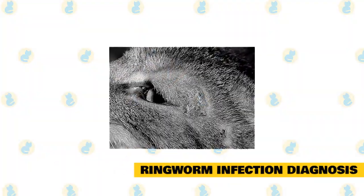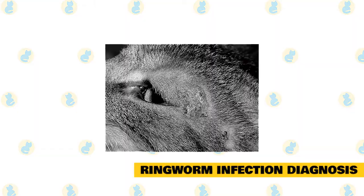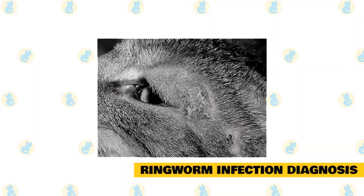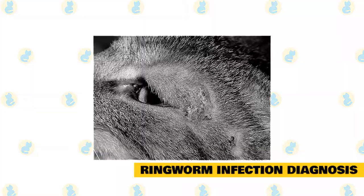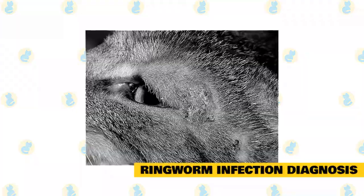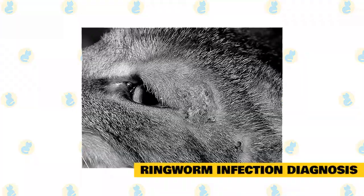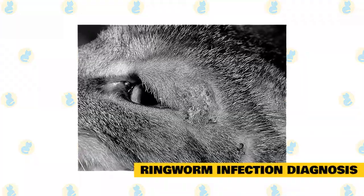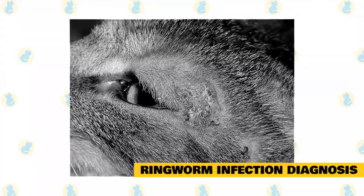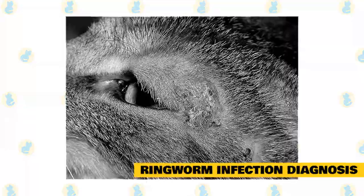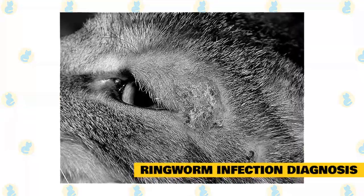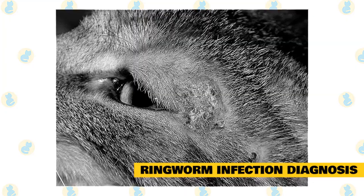Ringworm Infection Diagnosis. The majority of cases of feline ringworm caused by M. canis will glow with a yellow-green fluorescence when the skin and coat are examined in a dark room under a special ultraviolet lamp called a Woods lamp. However, not all cases show clear fluorescence and some other species of dermatophytes do not fluoresce under a Woods lamp. Some skin ointments and other materials also fluoresce and may give a false positive result.